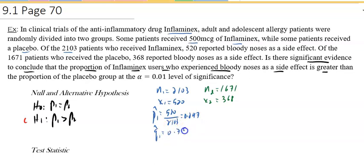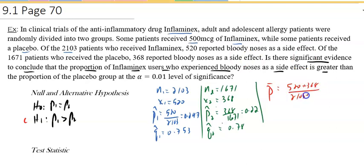If I work out p2-hat, that would be 368 divided by 1,671. If I put that in my calculator, that would be 0.220. q2-hat will be 0.780 approximately. Now p-bar: I need x1 plus x2, which was 520 plus 368, divided by 2,103 plus 1,671. p-bar turns out to be 0.235.